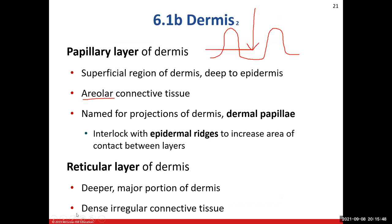The reticular layer is the bigger, deeper layer. This is where we find dense irregular connective tissue — the predominant type. There's so much of this tissue that if you're asked for the predominant tissue type in the dermis, the answer is dense irregular connective tissue, because the reticular layer is bigger and thicker than the papillary layer. Dense irregular connective tissue has more ground substance, which means more room for blood vessels and vascularity.